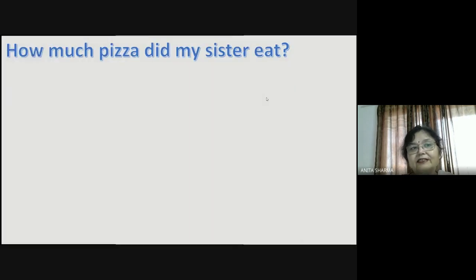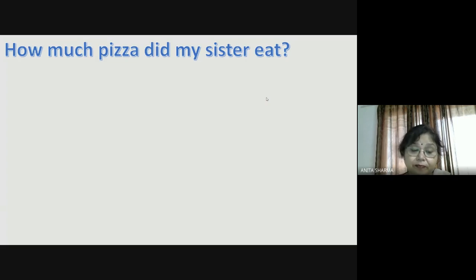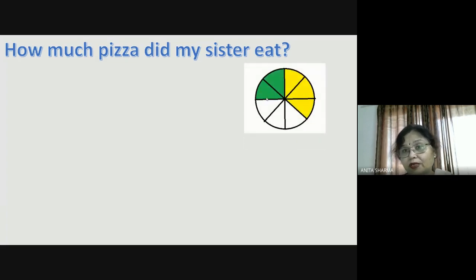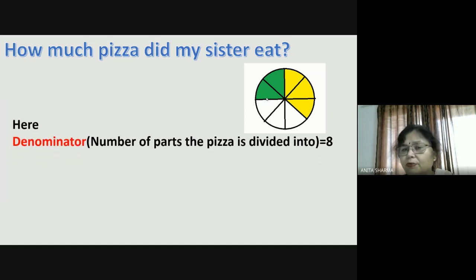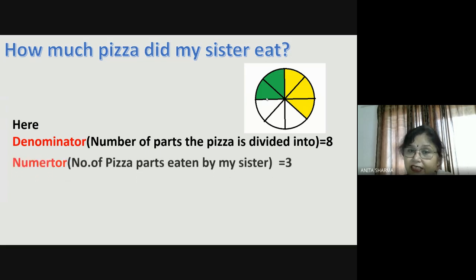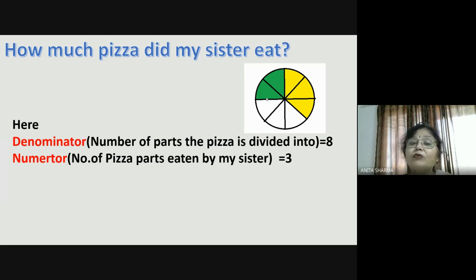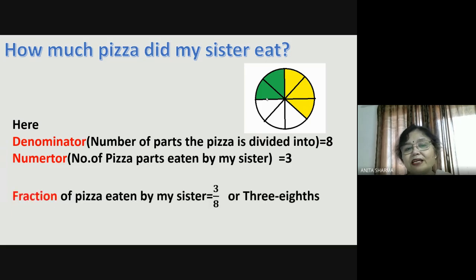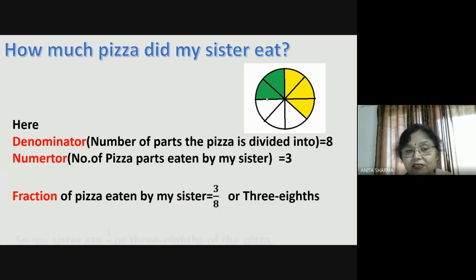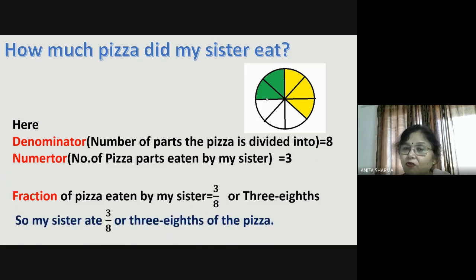Now let us understand how much pizza my sister ate. Here is the pizza — sister's share is the yellow one. The denominator remains the same because the pizza is divided into eight parts, so denominator is eight. But the considered part is changing — now I am considering how much my sister ate. My sister ate three pieces, three parts out of eight. The considered part is three, so fraction of pizza eaten by my sister is three by eight. My sister ate three-eighths of the pizza.